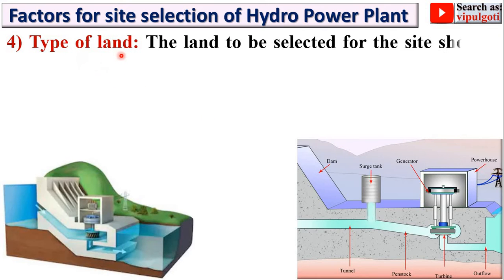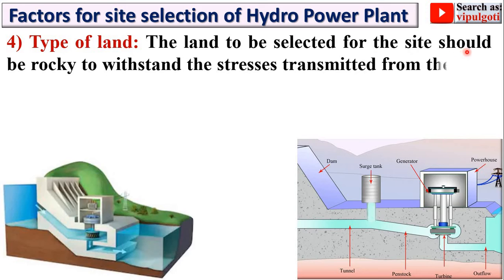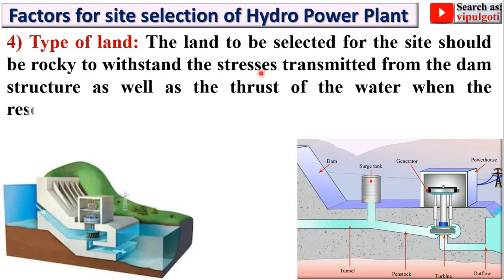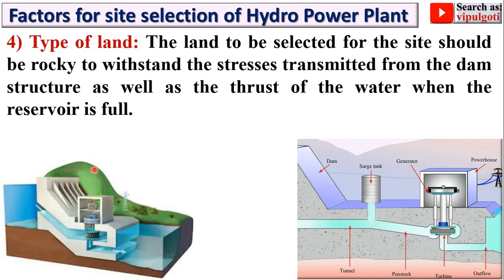The next point is type of land. The land selected for the site should be rocky to withstand the stresses transmitted from the dam structure. As you can see, the dam structure has a huge weight, so stress is developed and exerted on the rocky material of the land. The land should be strong enough to withstand the stresses from the dam as well as the thrust of the water when the reservoir is full.